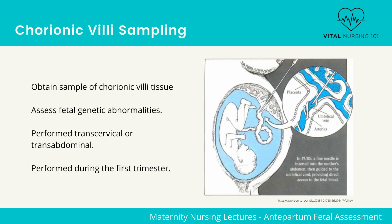Chorionic villi sampling. The purpose of this test is to obtain a sample of chorionic villi, which is from the placental tissue. The goal is to assess for fetal genetic abnormalities. This is performed transcervically or transabdominally and is performed during the first trimester. For nursing interventions, just know that it is similar to an amniocentesis.